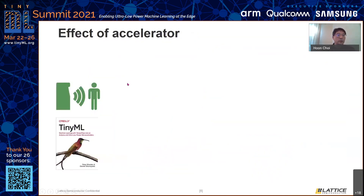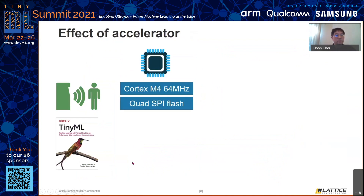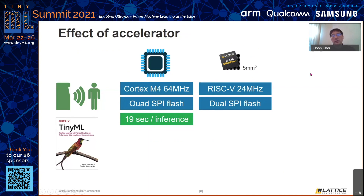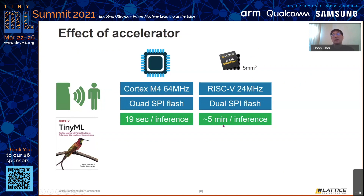We applied this to human presence detection, one of the examples in the TinyML book by Pete Warden. The baseline from the book: mapped to Cortex-M at 64 MHz, inference time is about 19 seconds. When we map this to our smallest FPGA — a 5-millimeter FPGA — the RISC-V soft IP runs at only 24 MHz with dual SPI flash, and the inference time becomes about five minutes. So I would have to watch a YouTube video waiting for each inference.